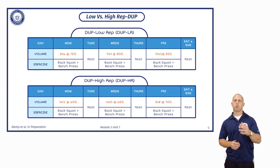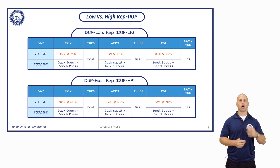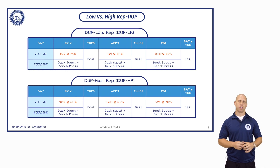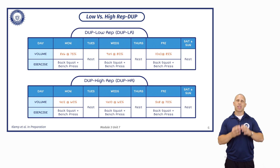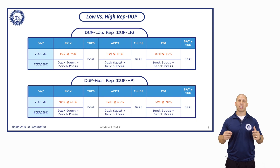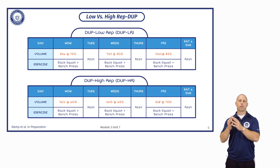On Wednesday we have four reps, and Friday we have two reps. That's a 6-4-2 undulation. On the bottom, in the high repetition group in this study, we have 12 reps on Monday, 10 reps on Wednesday, and 8 reps on Friday. So we have two different daily undulating programming strategies: 6-4-2 and 12-10-8.